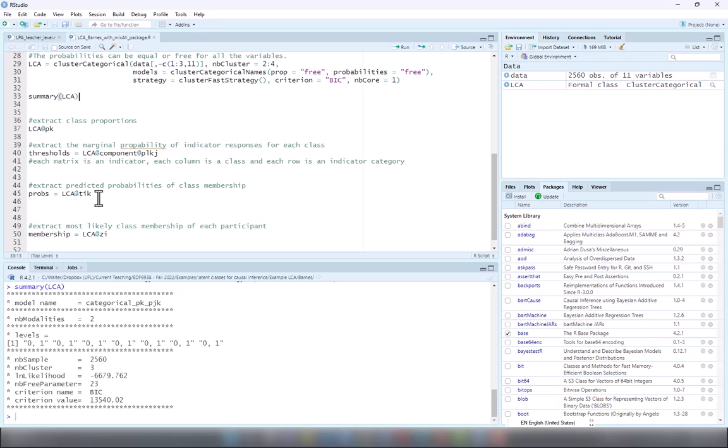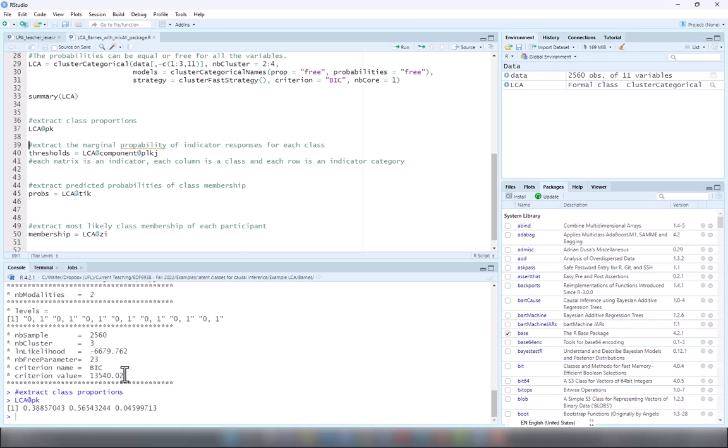This is the BIC of the three class model. Now I can extract the parameters. So extracting class proportions first. At least in the first class is 38% of the schools. The second class is 56% of the schools. And the third class is 4% of the schools.